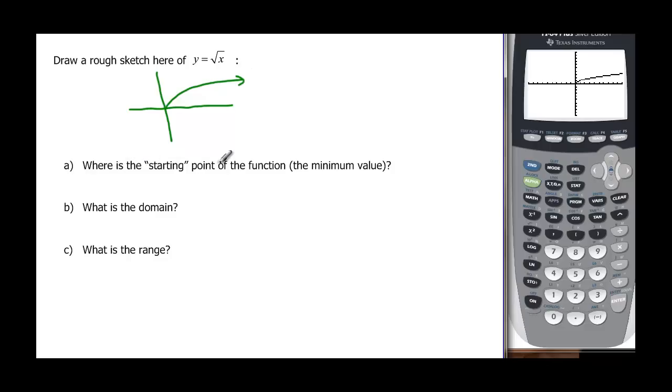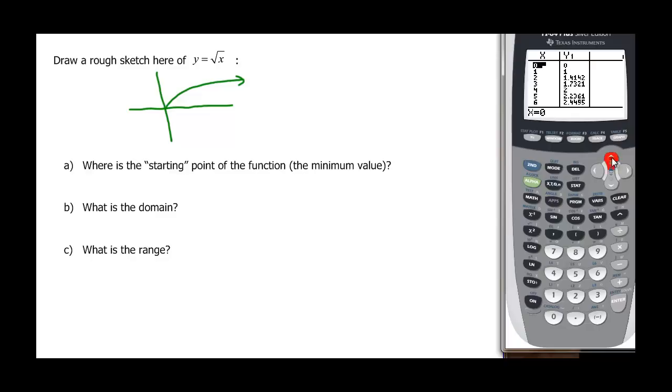I'm making a rough sketch and it looks something like this. So where is the starting point? This is called the minimum value. If we look in our table, we get (0,0), but at negative 1 there's an error. Anywhere beyond that backward, we'll have an error. So our starting point is (0,0).